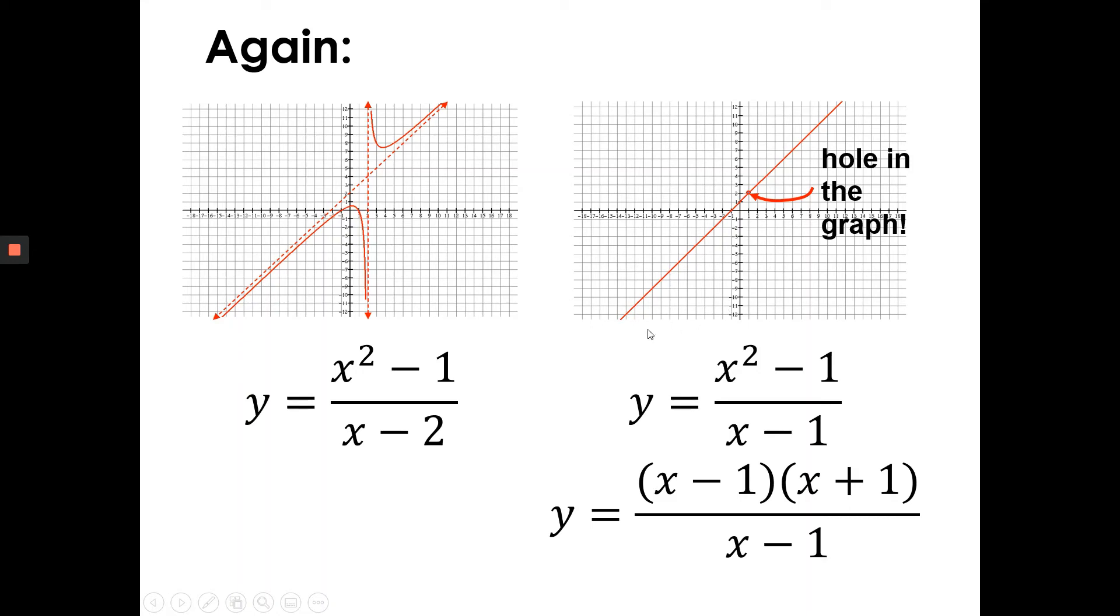So x plus 1 is what you learn in grade 9, slope of 1, y intercept of 1. And with that restriction of x not being able to be equal to 1, that's why there's an open circle here. There's a hole in the graph. So this is, in essence, a combination of what you did in grade 9 and grade 11 math, right? So it's a line with an open circle, a hole in the graph.